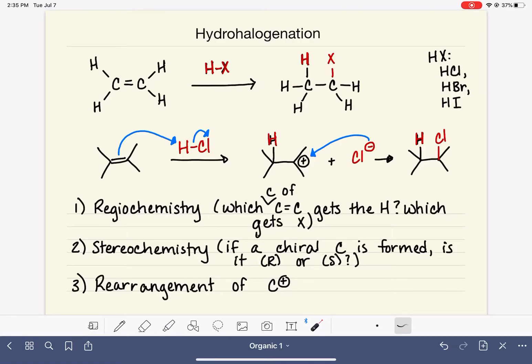We are looking at the conditions of the hydrohalogenation reaction where we are adding an HX molecule to an alkene, a carbon-carbon double bond. In this video, we're going to be looking at the stereochemistry, the potential for stereochemistry.